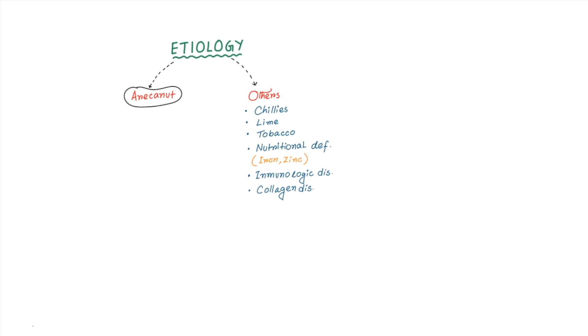Let's discuss one by one. Do we know the difference between arecanut and betel nut? We use these two terms interchangeably, but there is a slight difference. The term arecanut is used to denote the unhusked whole fruit of the arecanut tree, and the term betel nut is used exclusively to refer to the inner kernel or seed which is obtained after removing the husk.